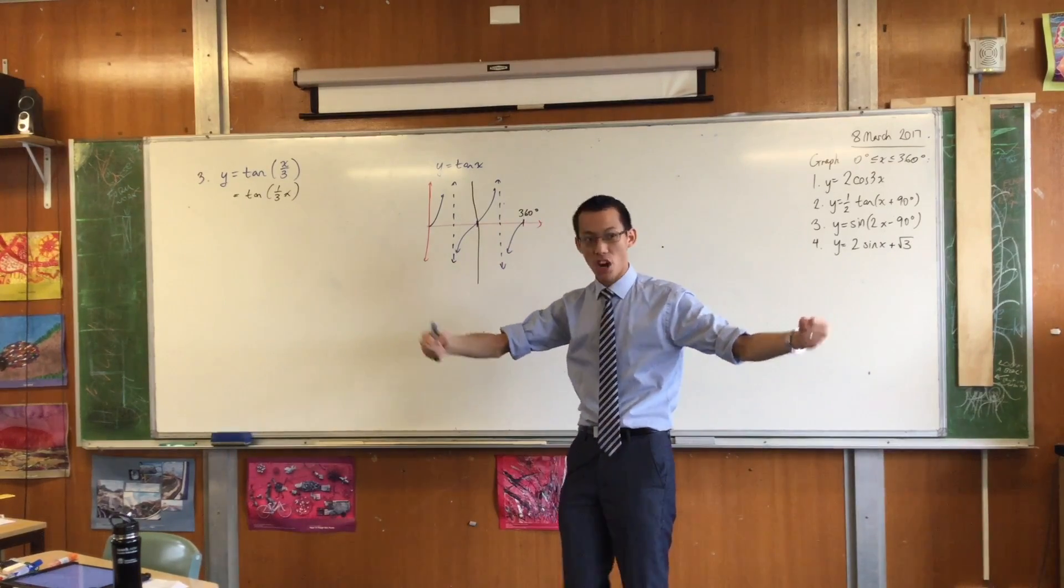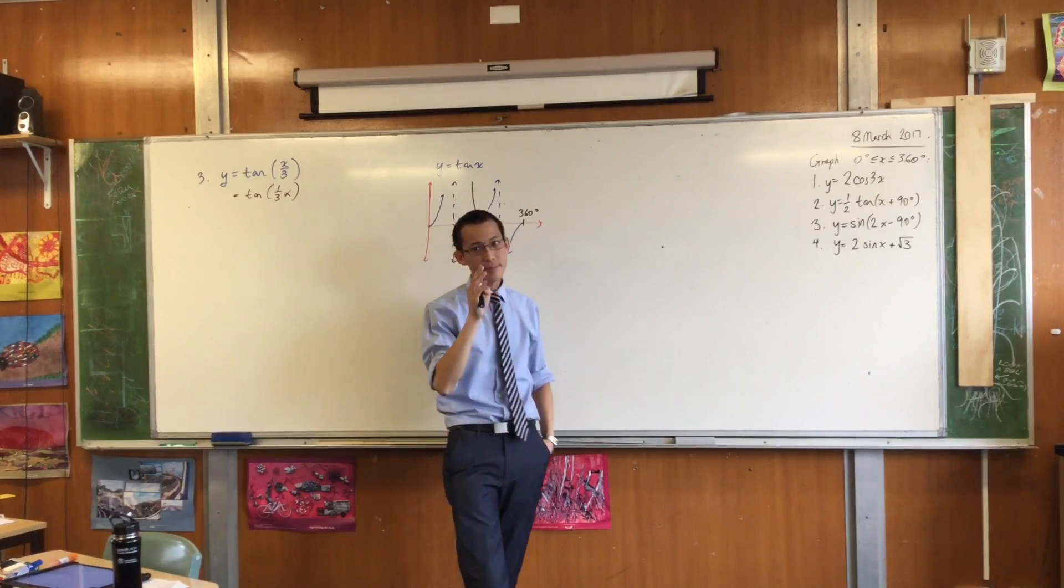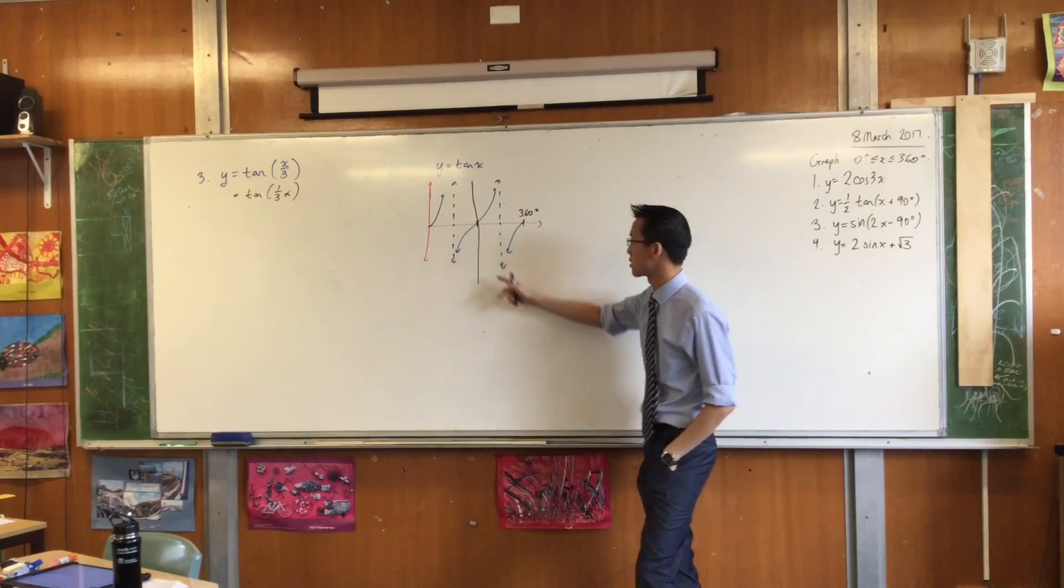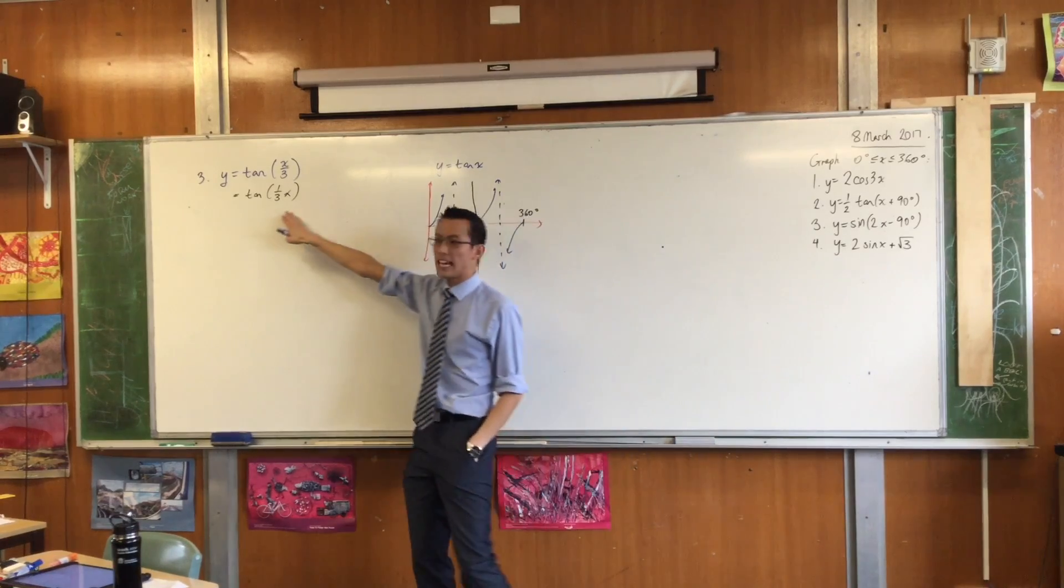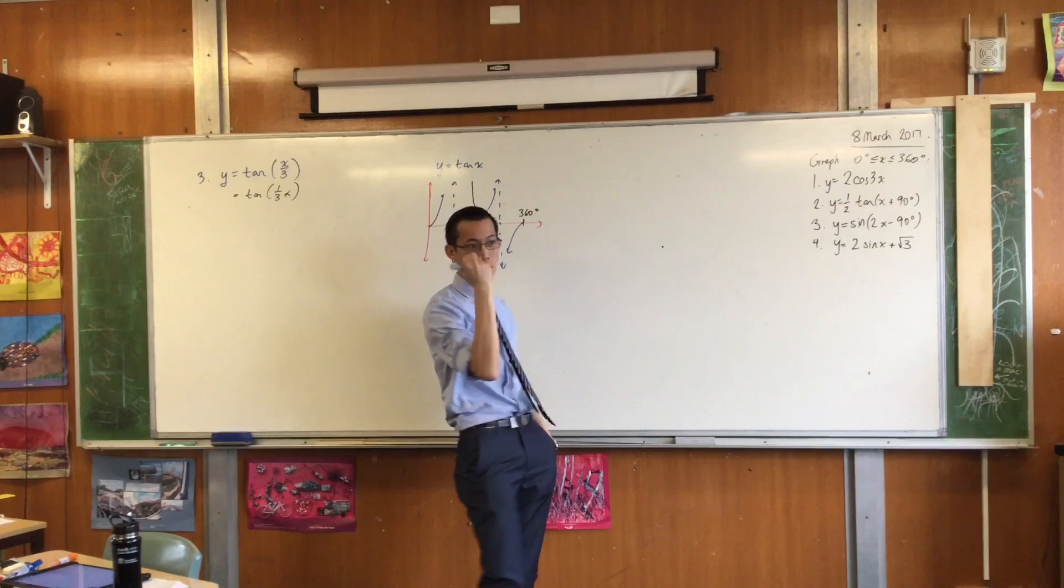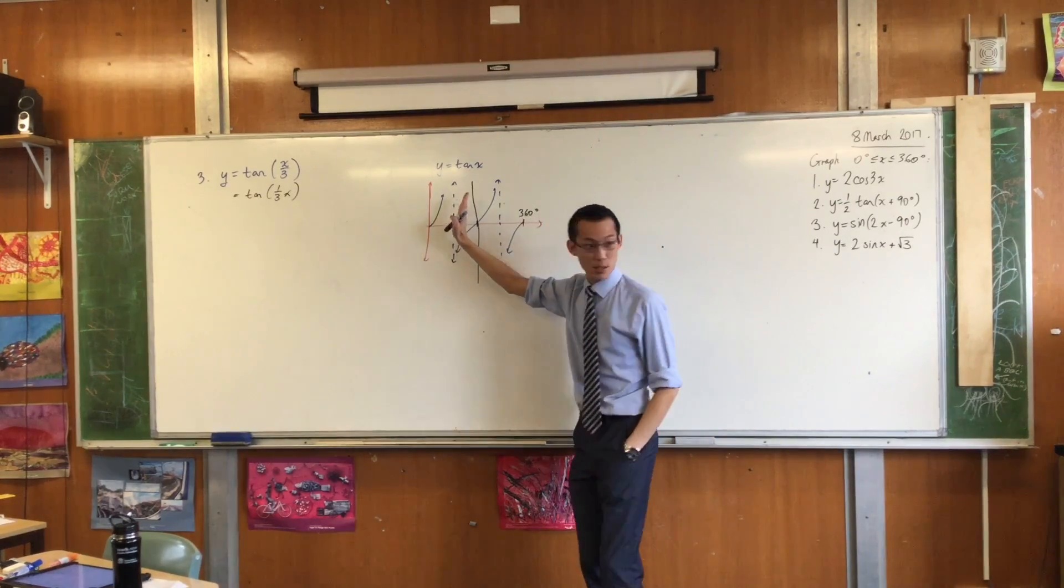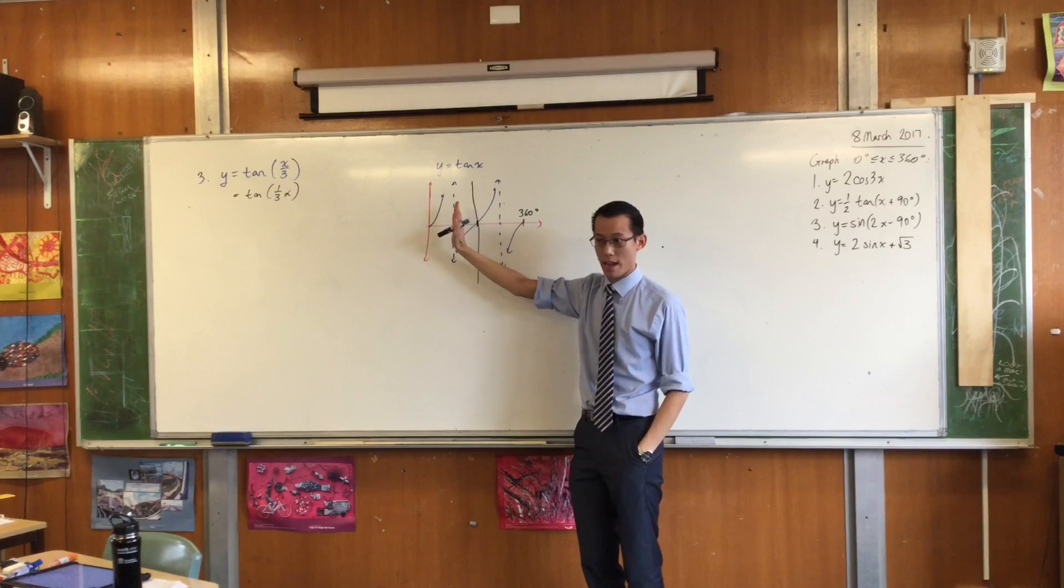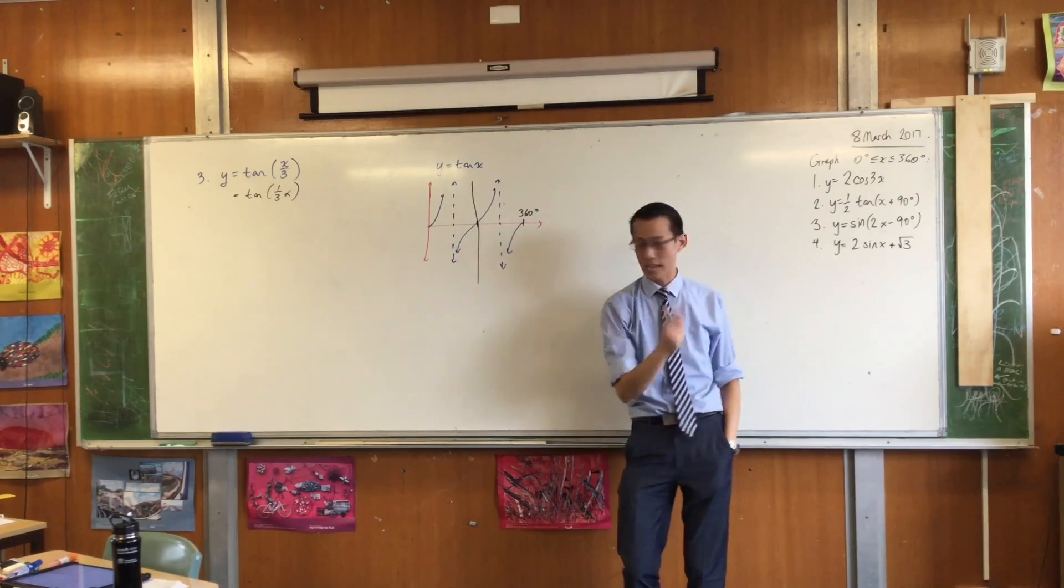So for example, have a look at when my first asymptote appears. See there? At 90 degrees. This guy takes a lot longer than 90 degrees to get to that asymptote. It takes him three times longer. So the asymptote for this graph, that appears first, will not be x equals 90. It will actually be x equals 270. That's the first asymptote.